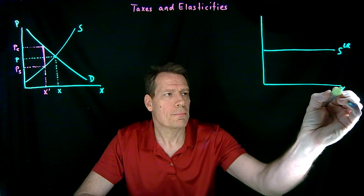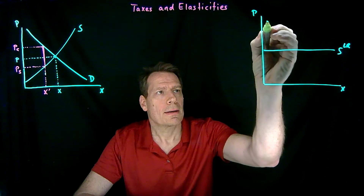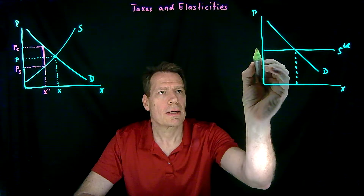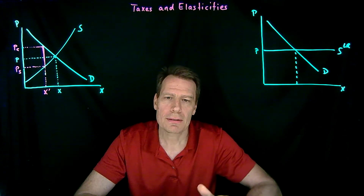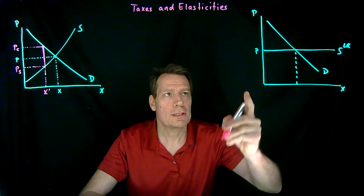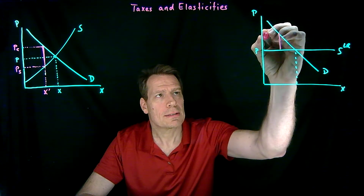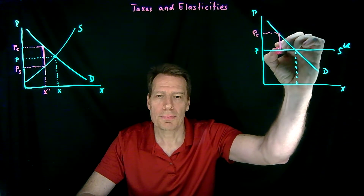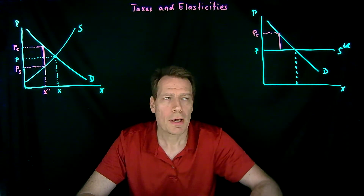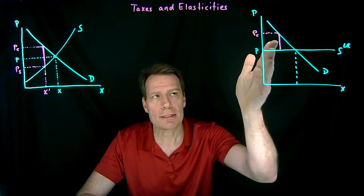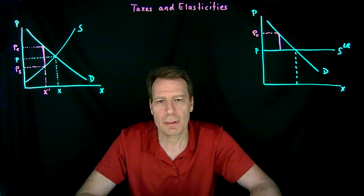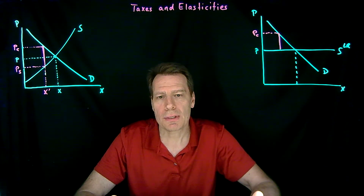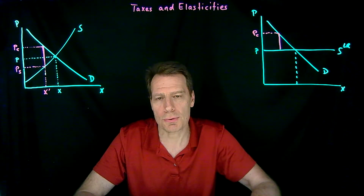So a supply curve would look like this, and the industry would produce that much at this price. When we now fit that tax wedge into this picture, we get something where consumer prices increase by the entire amount of the per-unit tax. In this case, the entire burden of the tax is passed on to consumers, because firms make zero profit before and they're going to make zero profit after.